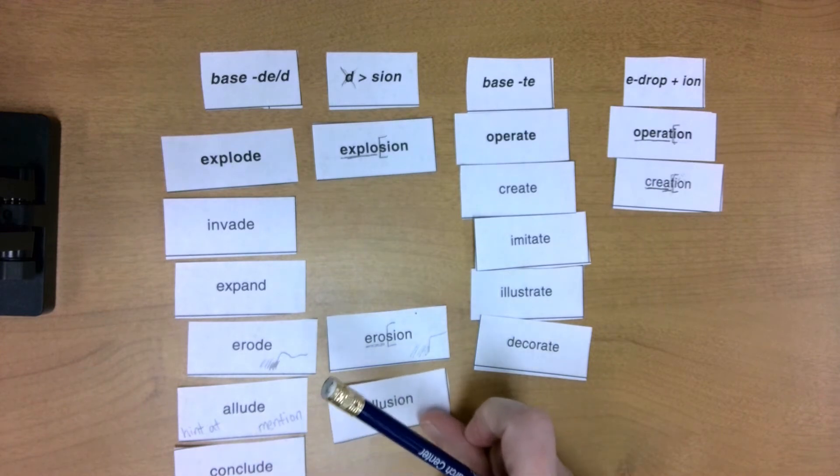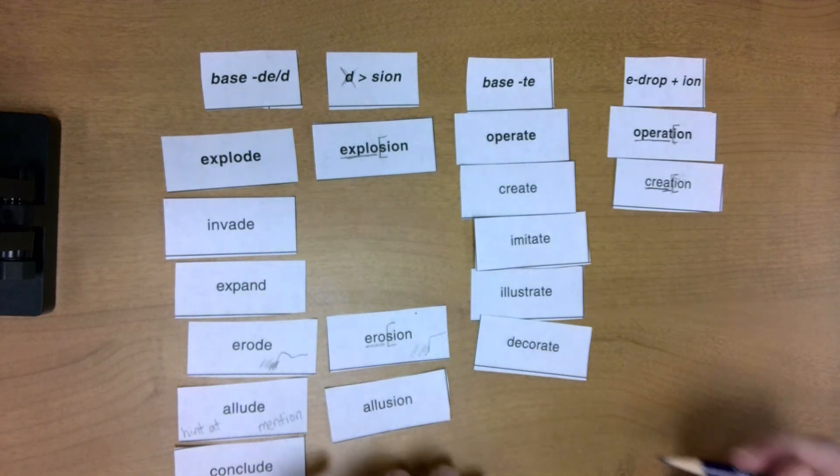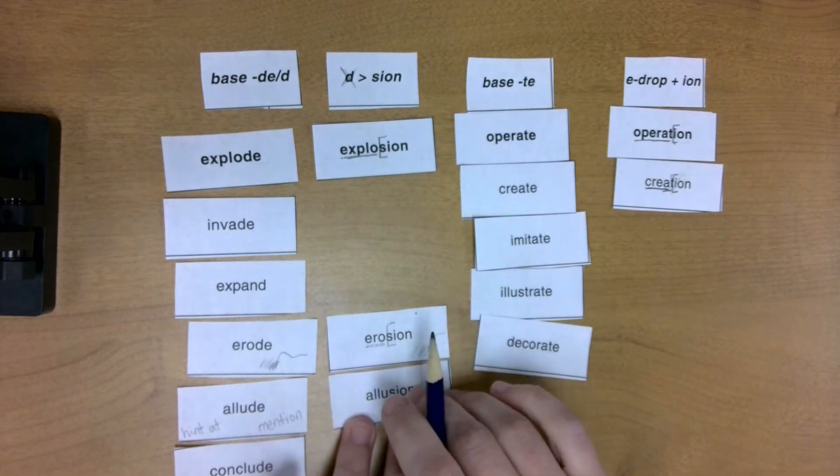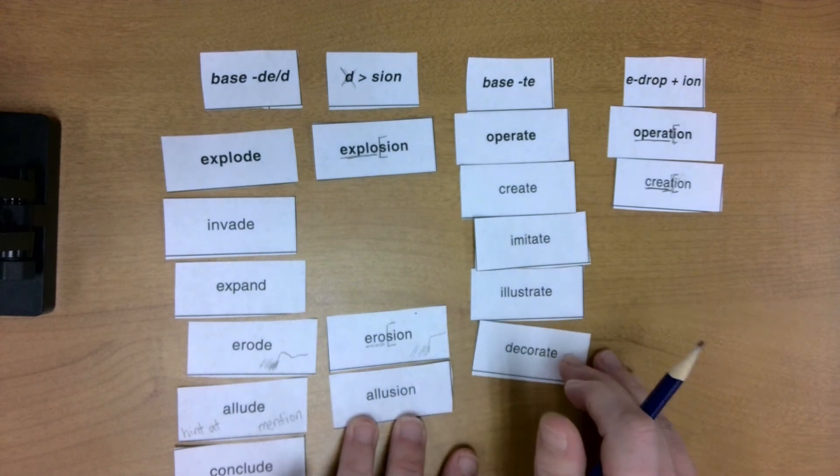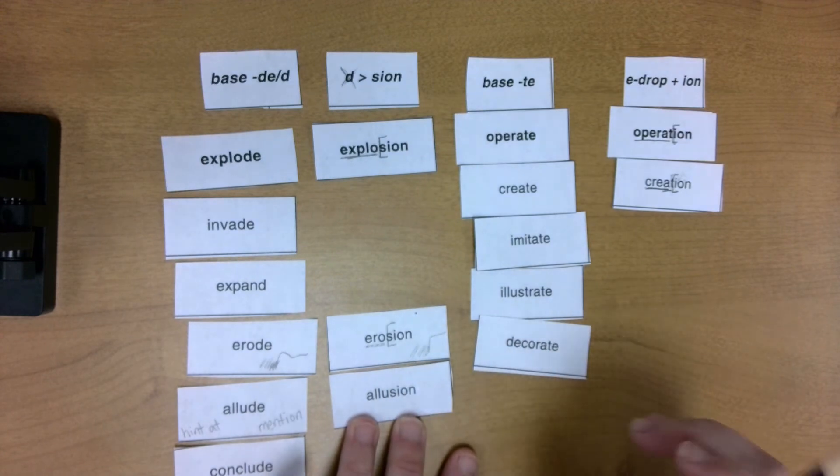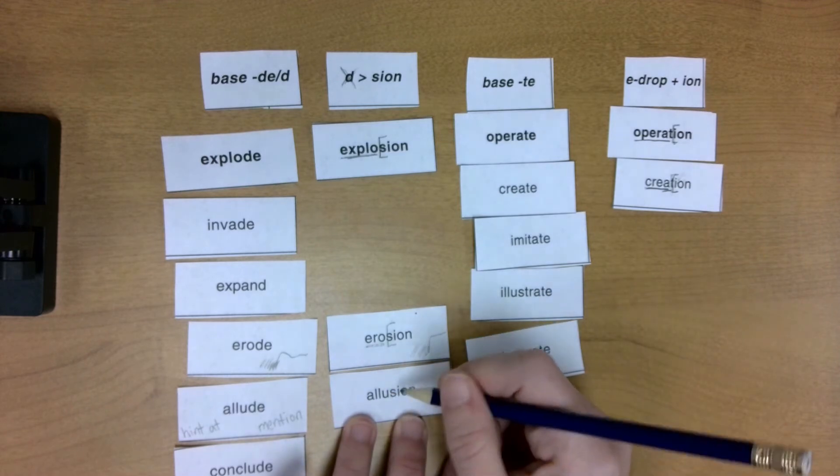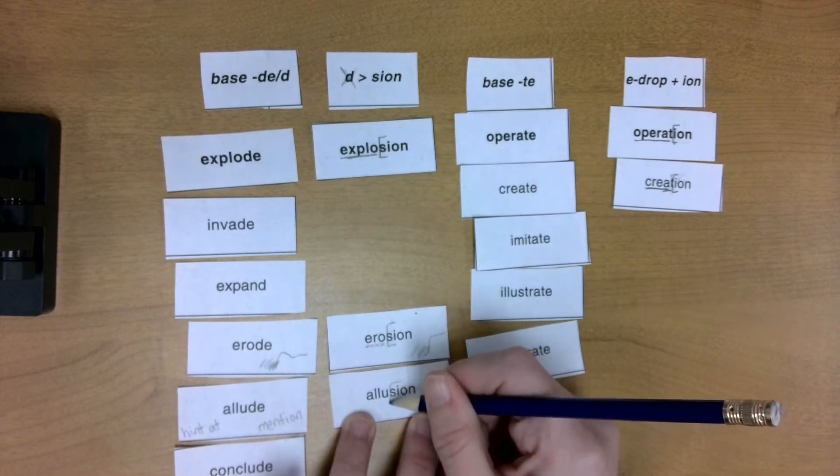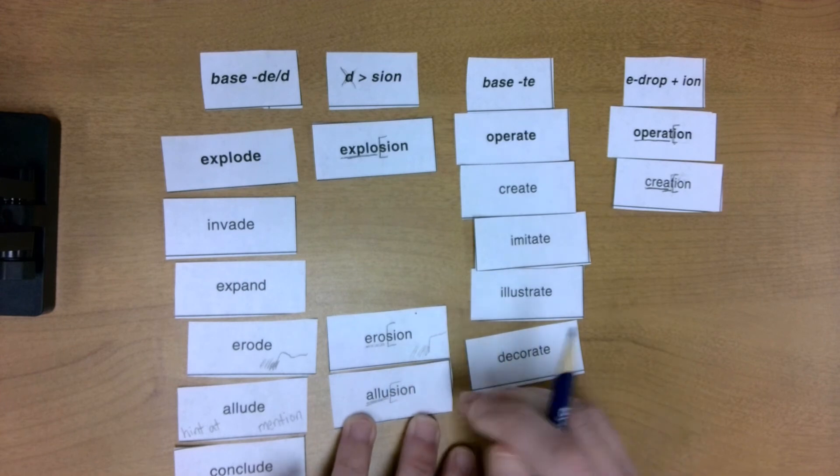Allusion. The state of mentioning or hinting at something. So this isn't like an illusion like a magician's illusion. It's a state of hinting at something. So take a look here. I'm going to chop off that S-I-O-N suffix. And look here and see that I had a D-E drop.